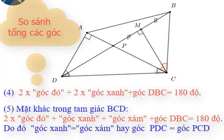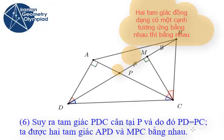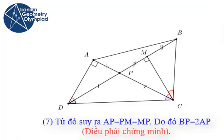We knew that PCM is similar to PAD, and because PD is equal to PC, these two triangles are congruent. So AP is equal to MP, so AP is half of BP, and we've proven the problem.